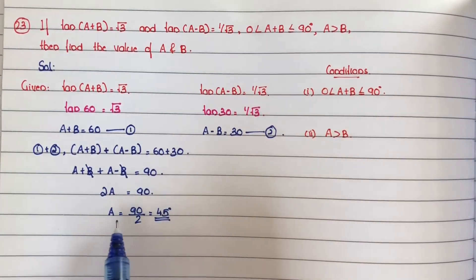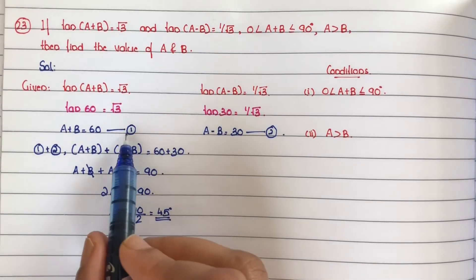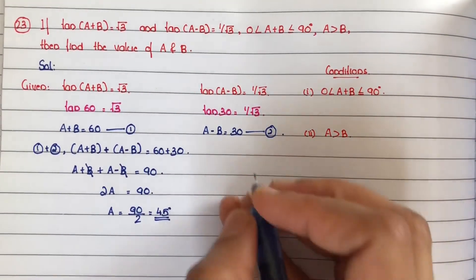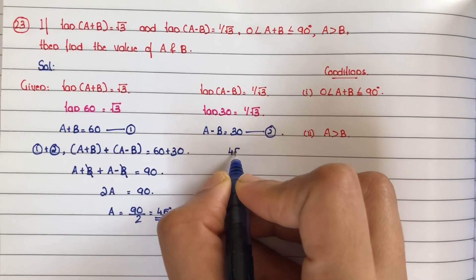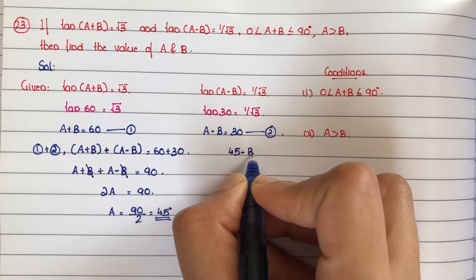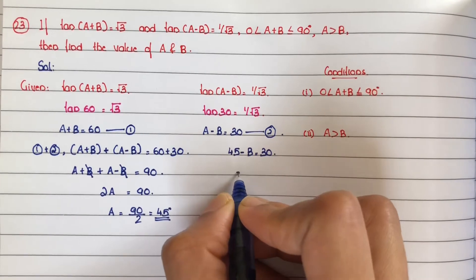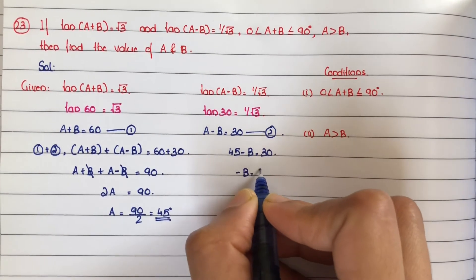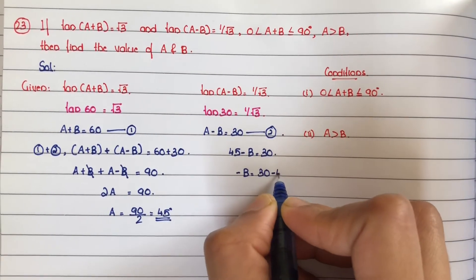Next, a is equal to 45. Substituting into equation number 2: 45 minus b is equal to 30, so minus b is equal to 30 minus 45, which gives b is equal to 15 degrees.